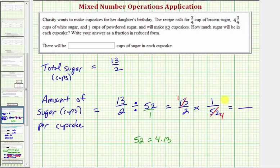Now we can multiply. In the numerator, we have one times one or one. In the denominator, we have two times four, which equals eight. This means there's one-eighth cup of sugar in each cupcake.